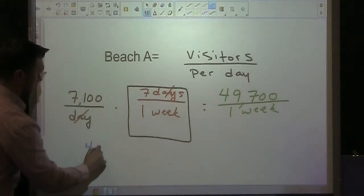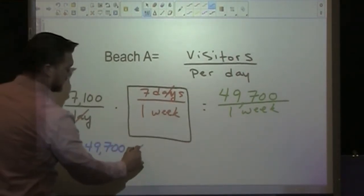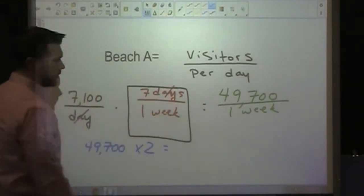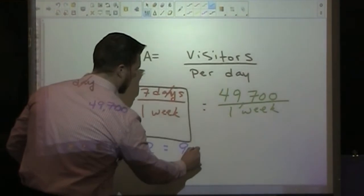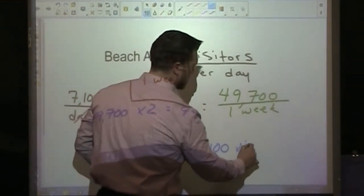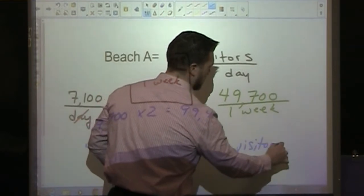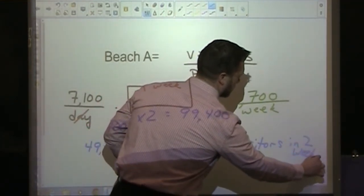So we have 49,700 times two for the number of weeks that we'd like to talk about, and we see that it is 99,400 visitors in two weeks.